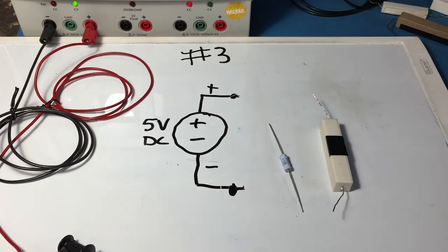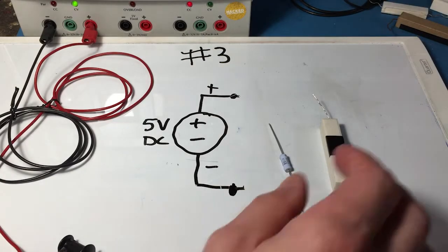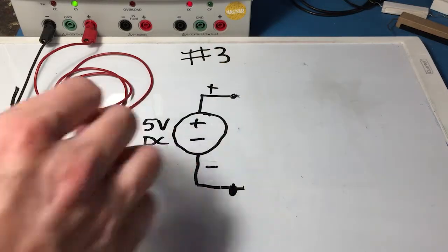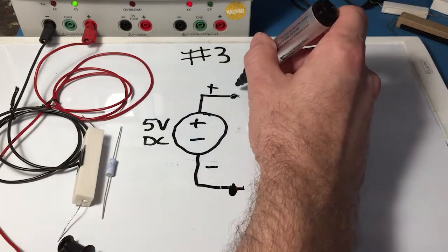Now we're going to build a circuit 3 with these two resistors right here. First we'll draw the schematic. These are going to now be in series where the other set was in parallel.